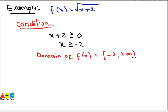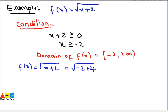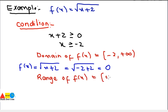The domain of f(x) is [−2, +∞). Now for the range: starting from the minimum domain value x = −2, substituting into f(x) = √(x + 2) gives √(−2 + 2) = √0 = 0. So the minimum output is 0, and the range of f(x) is [0, +∞).